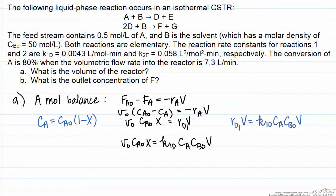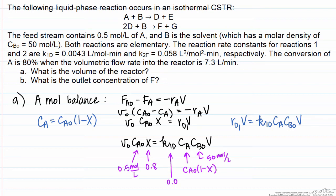The concentration of B in this case is a constant. We know all the values needed except for the volume, so we can solve for it directly. We're given the inlet concentration of B of 50 moles per liter, CA equals CA0 times (1 minus x) where x is 80% and CA0 is 0.5 mol/L. The rate constant K1D is 0.0043 liters per mole per minute, and the volumetric flow rate is 7.3 liters per minute. Solving, we find the volume is equal to 140 liters.